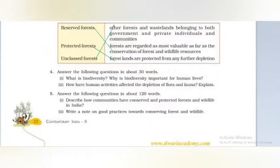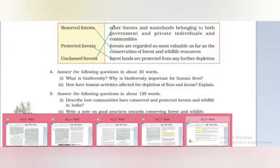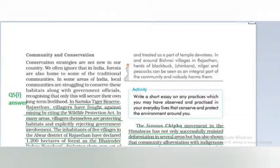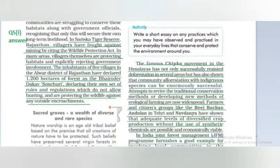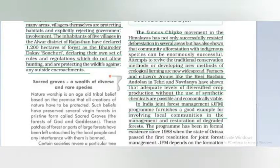Answer the following questions in about 120 words: describe how communities have conserved and protected forest and wildlife in India. We will refer to the community and conservation paragraph. The role of the community can be seen in Sariska Tiger Reserve, where Rajasthan villages have been fighting against mining. In Alwar district, Rajasthan, villages have declared 1,200 hectares of land and forest area as a wildlife sanctuary, banning hunting activities. There is also the role of Joint Forest Management, which is a very important community role.